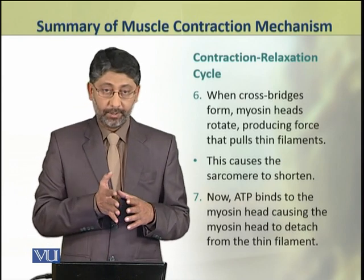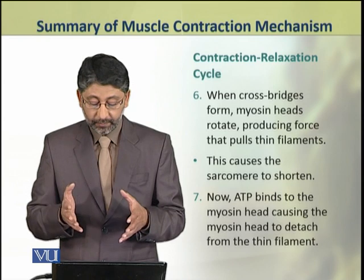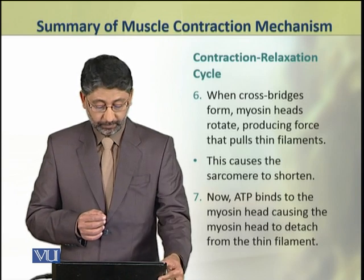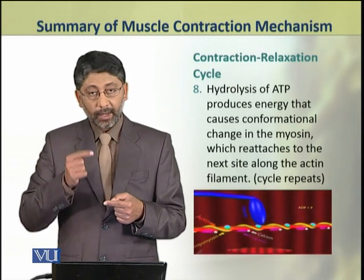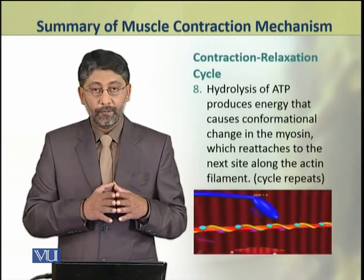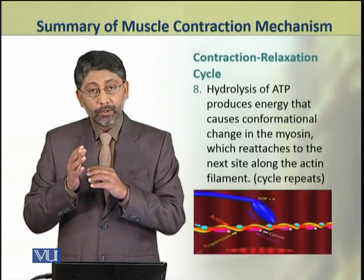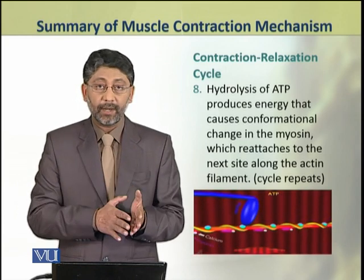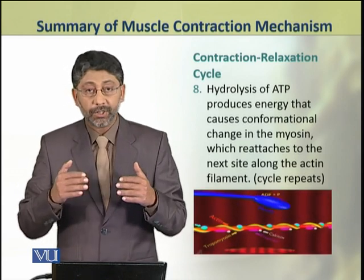In the next step, ATP binds to the myosin head, causing the myosin head to detach from the thin filament. After this, ATP hydrolyzes, and the energy produced causes a conformational change in the myosin, which using this energy reattaches to the next site present on the actin filament. This cycle of binding and rebinding is repeated several times until the contraction and shortening is complete.